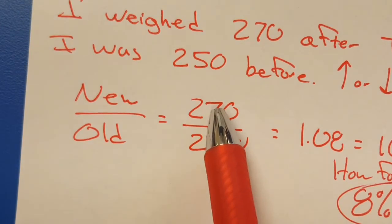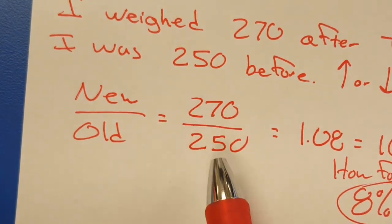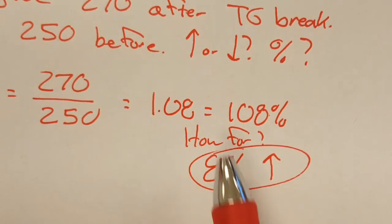If I take the new value, my new weight at 270, divided by 250, I get 1.08. Really quick, that's 108%. So how far off am I from 100? Well, I'm 8% over.